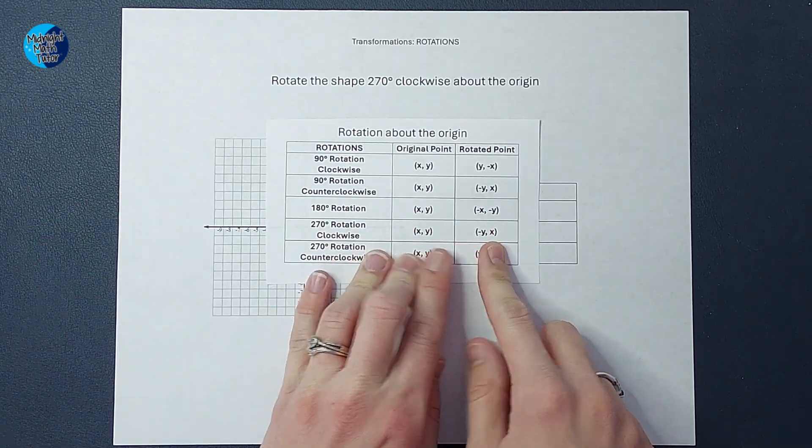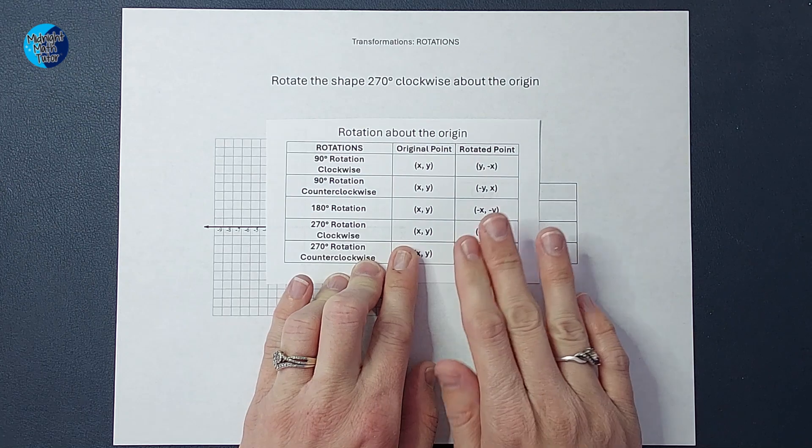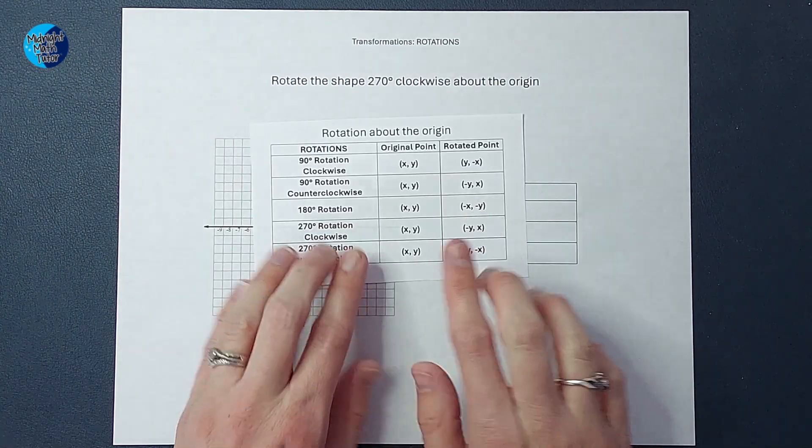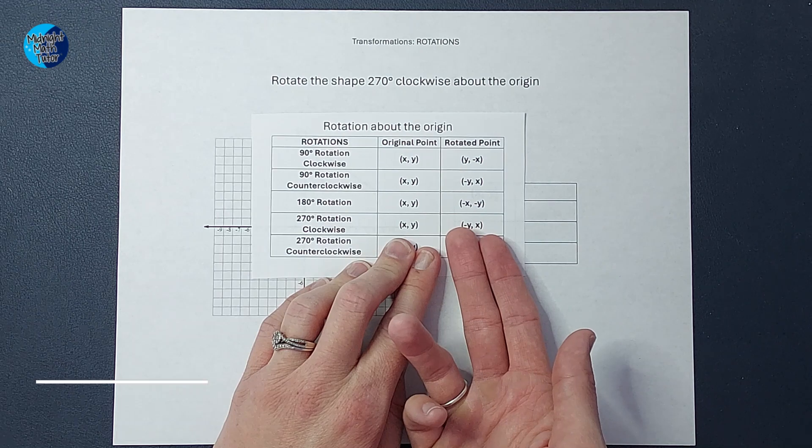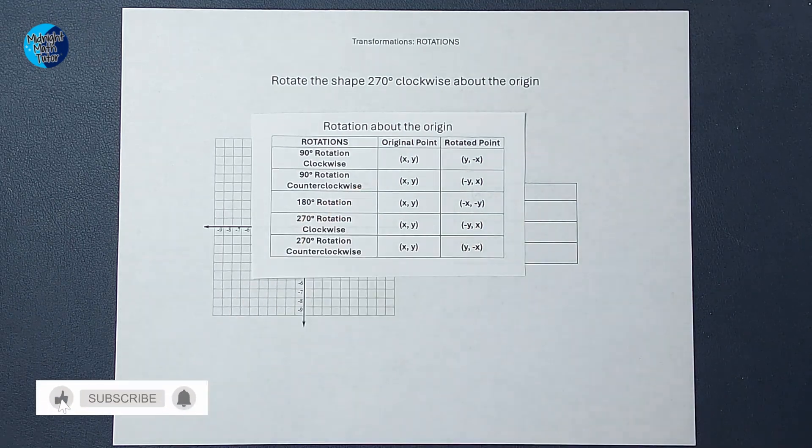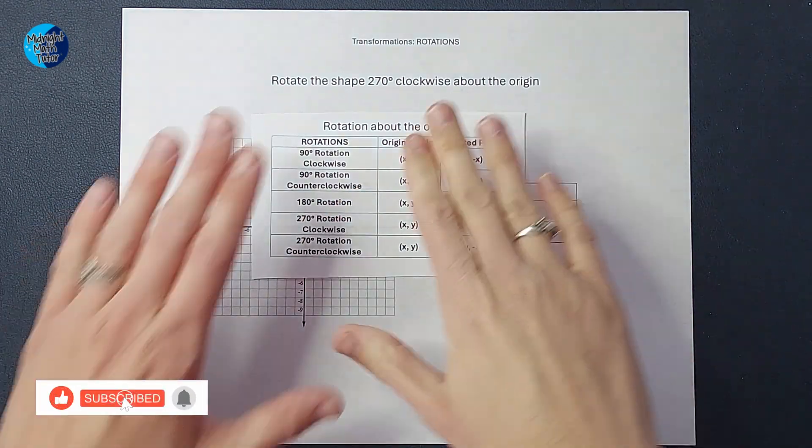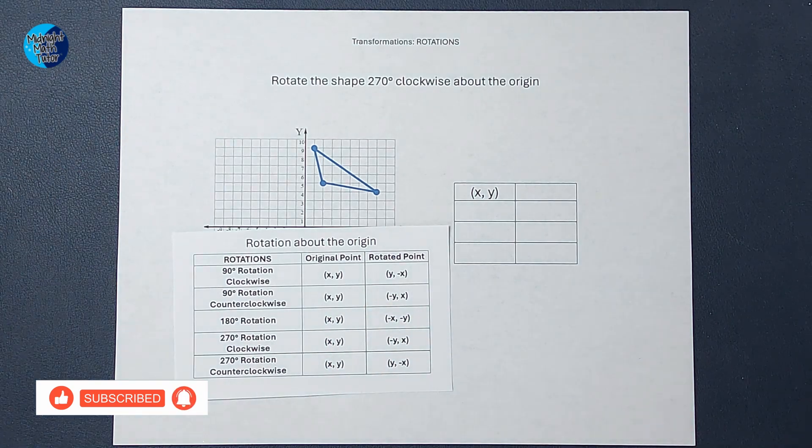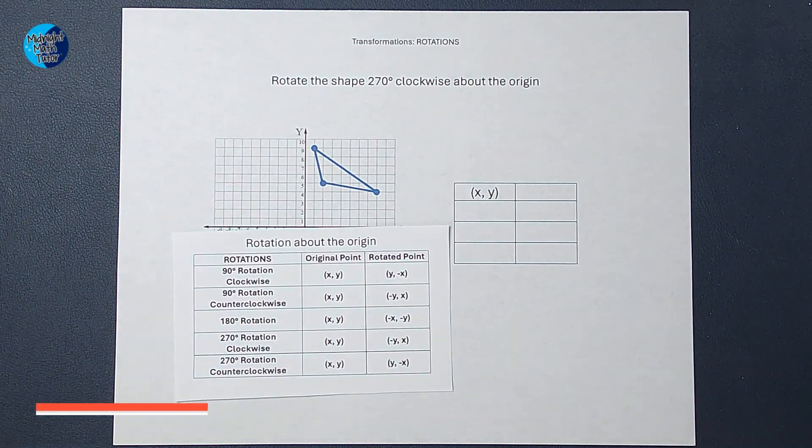So to do that, I am going to take my original point on my shape, which we'll figure out. So I am going to flip the X and Y and change Y's sign. Now if you're like, what on earth are you even talking about? We're going to do it. So don't stress.